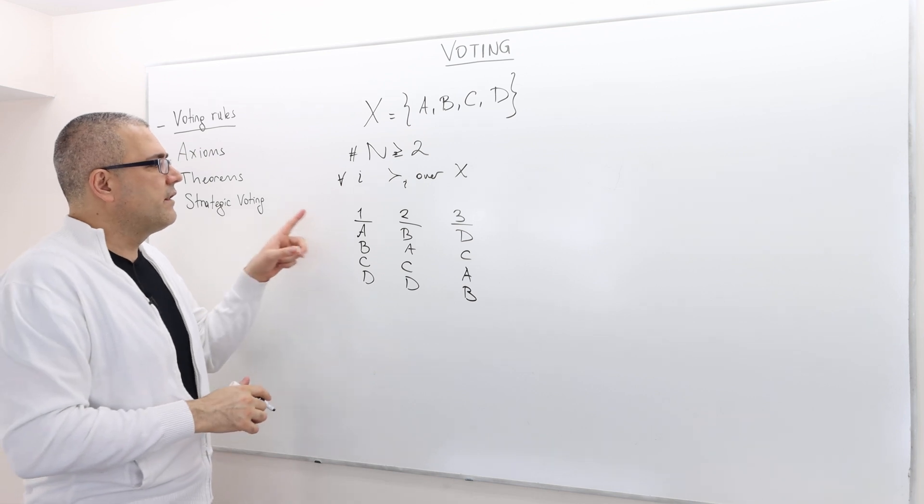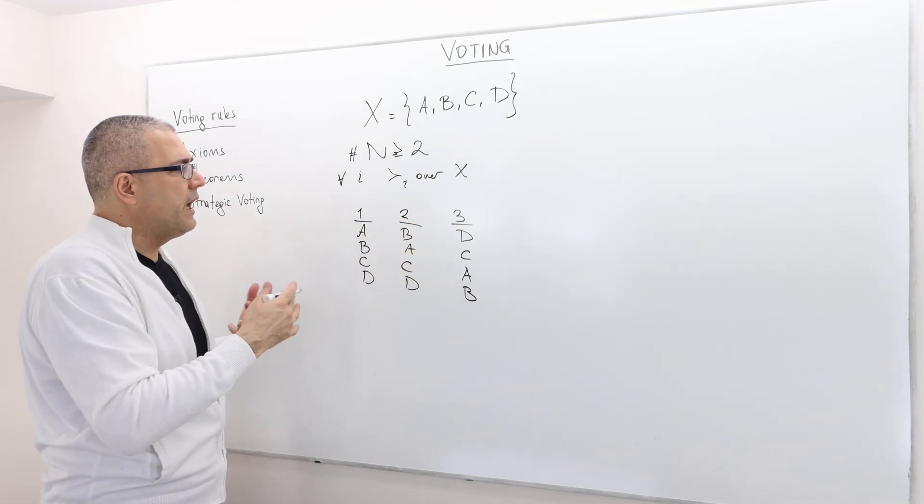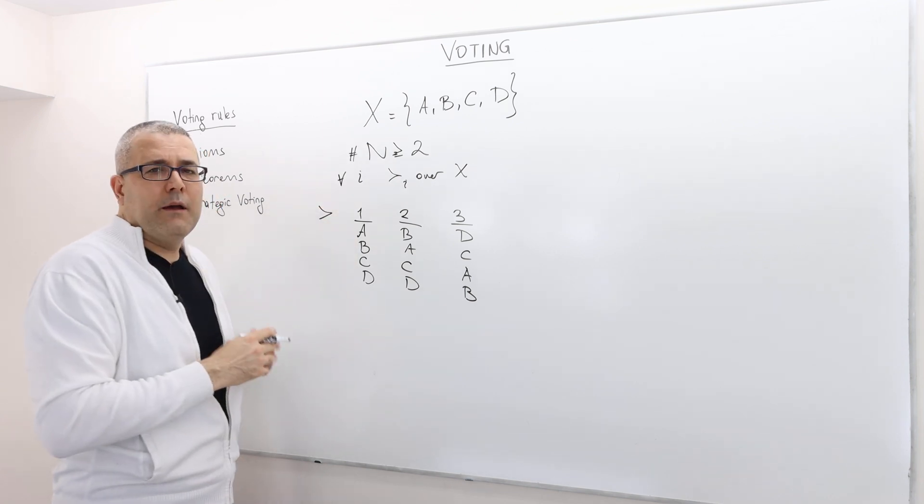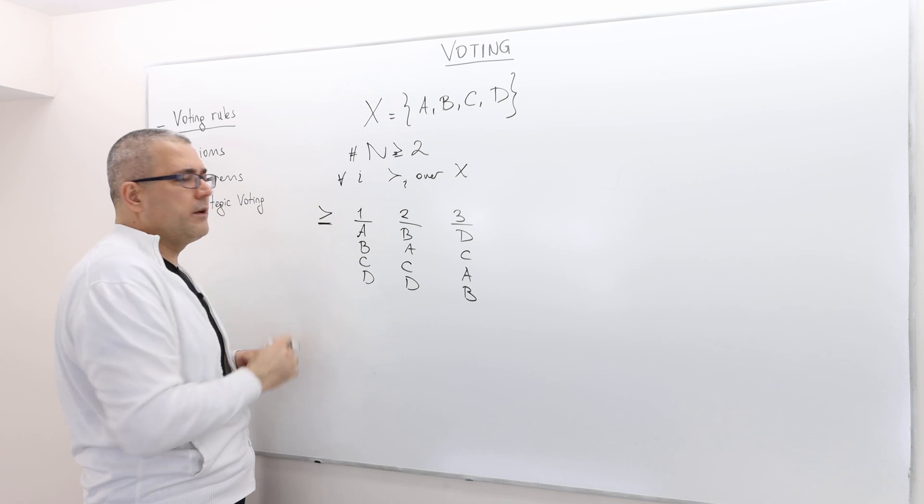So if I have three players, this basically gives me a preference profile. I'm going to denote it by this. Let's write it, this is the preference profile.